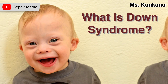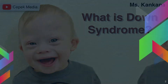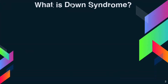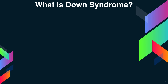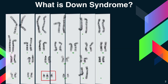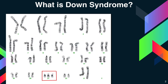What is Down syndrome? Down syndrome is also known as Trisomy 21. It is a genetic disorder caused when abnormal cell division results in an extra full or partial copy of chromosome 21. This extra genetic material causes the developmental changes and physical features of Down syndrome.